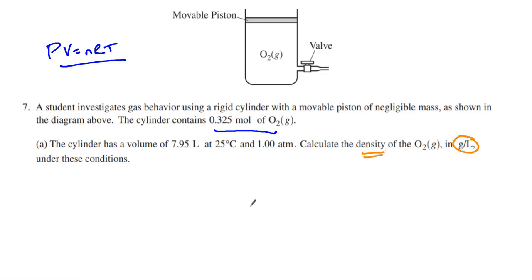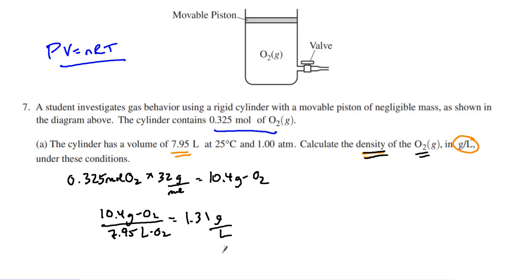Now take a look at these units of density, grams per liter. I already have liters, which means all I need is grams. All I need is grams. Well, I have moles. So if I have moles, I can do grams. So if I take 0.325 moles of O2, how do I find grams? I multiply by its molar mass, 32 grams per mole. And that ends up giving me 10.4 grams of O2. I want to know the density of O2 in grams per liter. So that means I have 10.4 grams of O2. I know I have 7.95 liters of O2, which means that it would be able to find the density of 1.31 grams per liter.